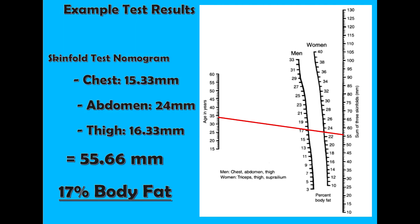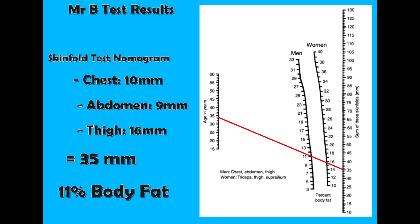In one example, the skinfold sum came to 55.66mm. This was then plotted on the nomogram with my age and came out with 17% body fat. With my actual test results, it came to 35mm and plotting on the nomogram came out at 11% body fat.